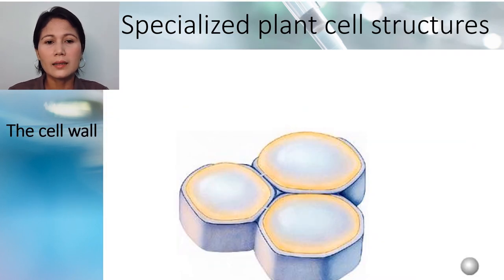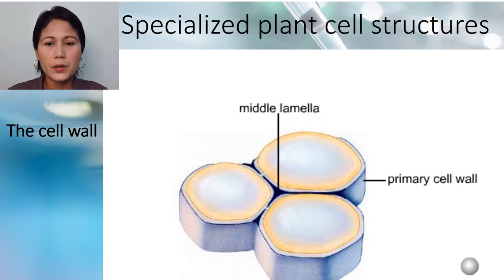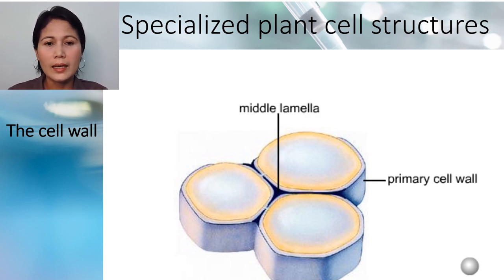Another specialized plant cell structure is the cell wall. The first wall formed in actively growing regions is the primary cell wall. Primary cell walls are thin and pliable and allow the cell to continue to enlarge. Cell secretions form the middle lamella, a layer between adjoining cells.